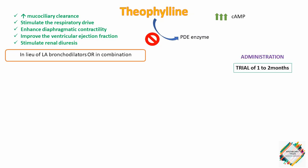Theophyllin may be used in lieu of other long-acting bronchodilators or in combination. A trial of one to two months with serum drug levels maintained at 5 to 12 micrograms per ml is usually done, and then maximized. Because of the non-bronchodilator effects of methylxanthines, they may be continued in the presence of a clinical response even in the absence of improved FEV1. If no change occurs in the patient's clinical condition and/or FEV1, then theophyllin therapy should be discontinued owing to its potential for side effects.